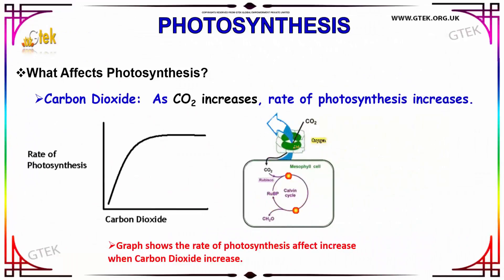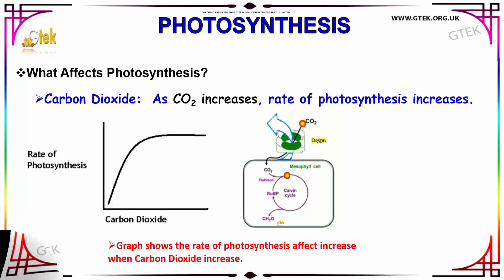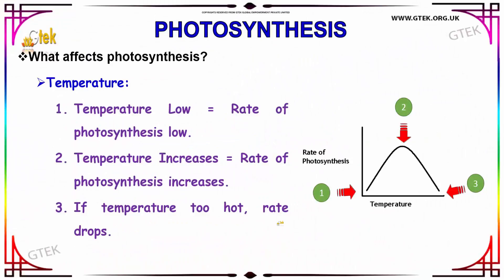The second factor is carbon dioxide. If carbon dioxide increases, then the rate of photosynthesis increases. Here you can see the graph depicting the rate of photosynthesis affected by carbon dioxide — if carbon dioxide increases, then the photosynthesis process also increases. The carbon dioxide factor is represented here in the Calvin cycle.